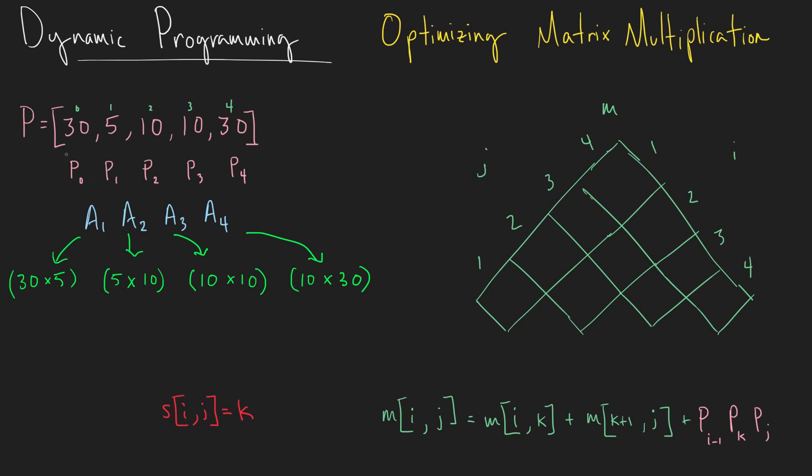We need an array P that has the dimensions of our matrices. I've lined them up so that you can visualize whose dimensions are whose. So A1 has the dimensions 30 by 5, A2 has the dimensions 5 by 10, A3 has the dimensions 10 by 10, and A4 has the dimensions 10 by 30.